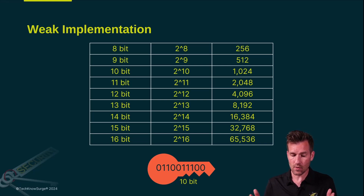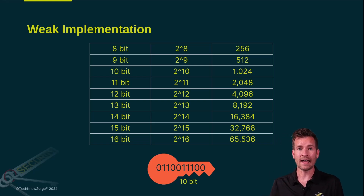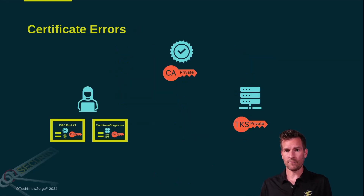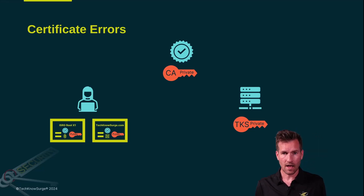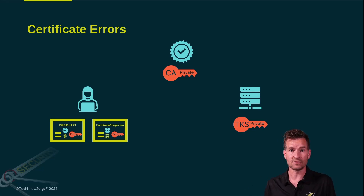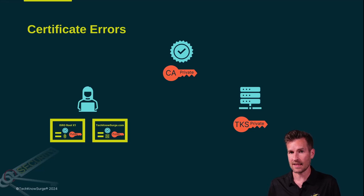One example might be if you have a choice of the key length — key length is going to be really important to how strong that cipher is. Another thing to watch out for is certificate errors. Watch for things like certificates expiring. Also be concerned about issuing any kind of self-signed certificates that could desensitize your users into accepting things that they shouldn't accept.